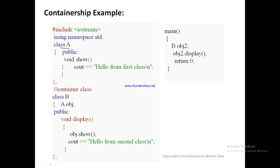In a simple example, we have class A with a member function show() which displays the statement 'hello from first class'. There is another class B which contains one display function. What we are going to do is create the object of class A inside class B to call the show function. We create the object of class A as: A OBJ, where OBJ is the object of class A. Display is the member function of class B. Inside the display function, we call the member function of class A: OBJ.show(), and a cout statement to display 'hello from second class'.